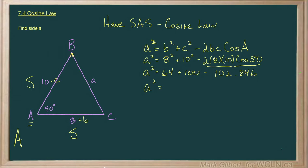Now, I'll go 64 plus 100 minus 102.846. 64 plus 100 minus 102.846 equals 61.154.